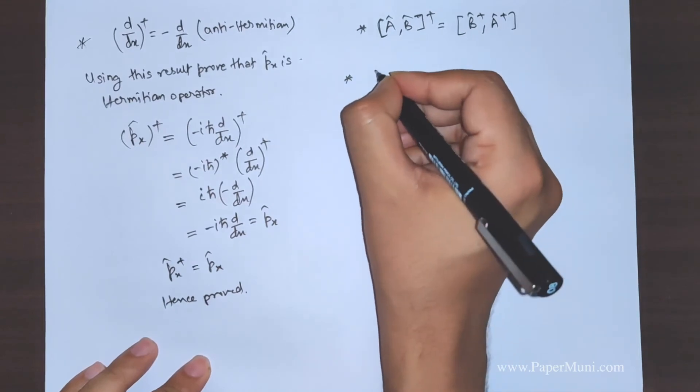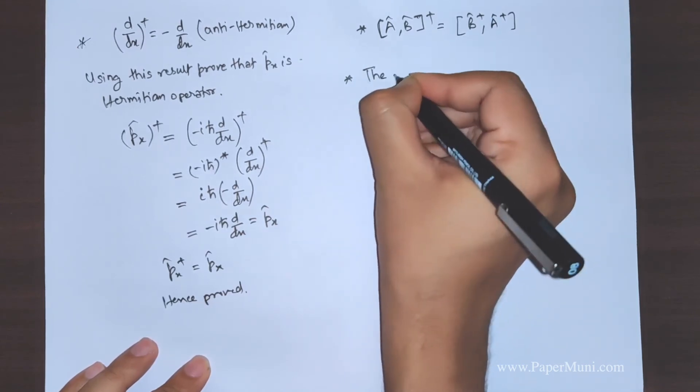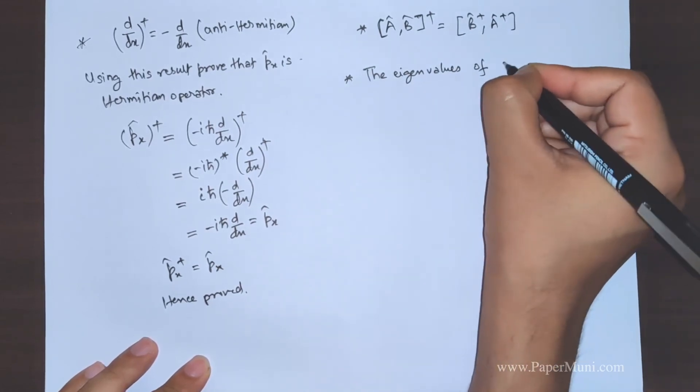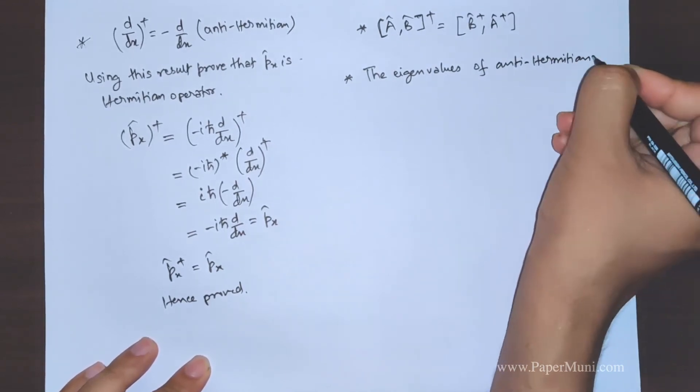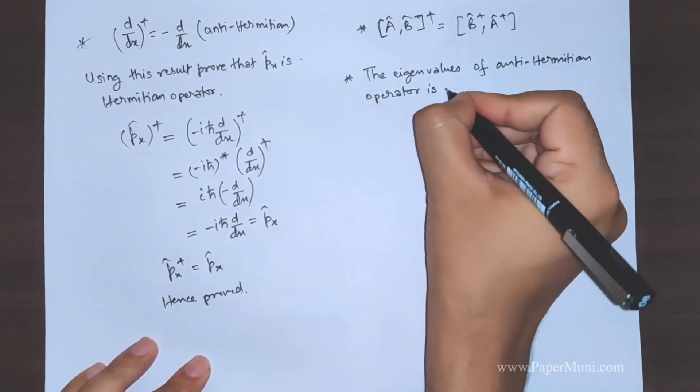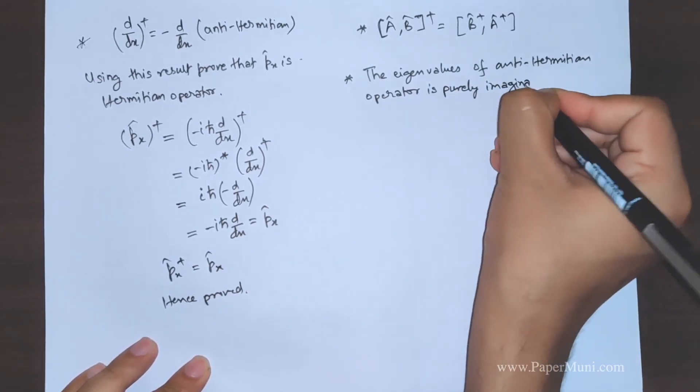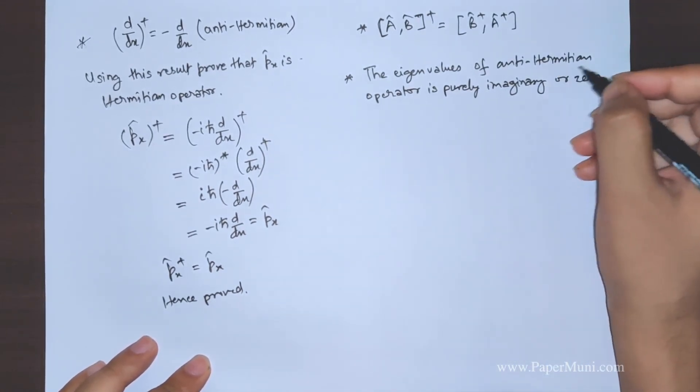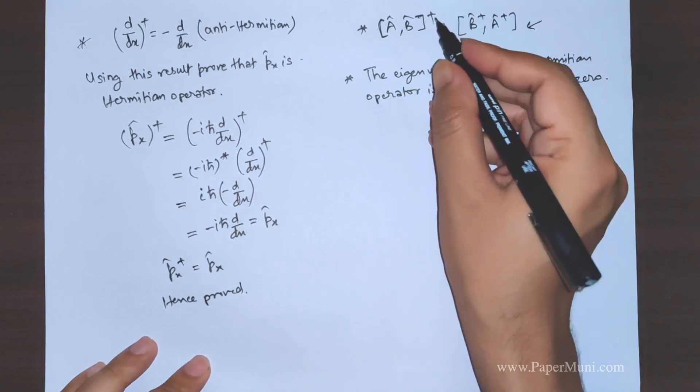Again, I state a property of antihermitian operator without proof that the eigenvalues of antihermitian operator is purely imaginary, it's purely imaginary or zero. If you want, you can look up the proofs for this statement. This can be easily proven. Just expand it and operate the operator, you'll get it.